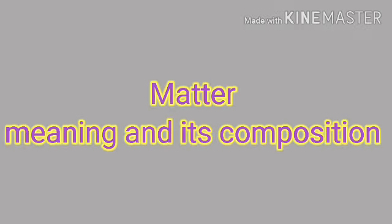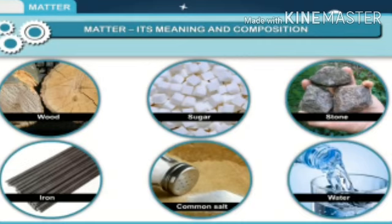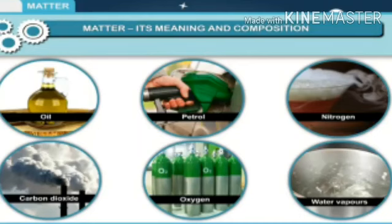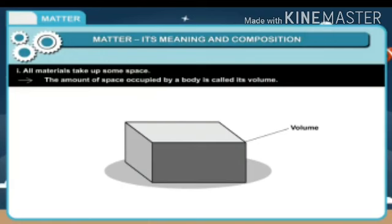Matter — its meaning and composition. There are various materials around us such as wood, sugar, stone, iron, common salt, water, oil, petrol, nitrogen, carbon dioxide, oxygen, and water vapour. The following two properties are common to all these materials.